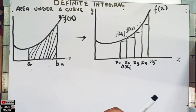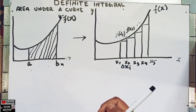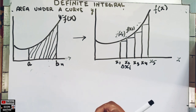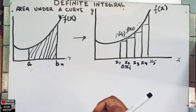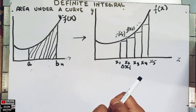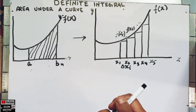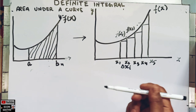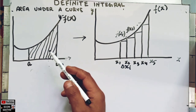Hi, this is Halal. In this video on the mathematical economics series, we will discuss the definite integral. The definite integral is used to find the area under a curve. In economics, it is used to find the producer surplus, the consumer surplus, and so on.